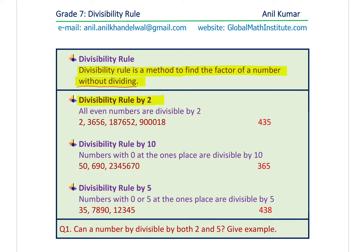Let's talk about the general rules: divisibility by 2. All even numbers are divisible by 2. What you look at is the last digit — you check the ones place. The ones place should be a multiple of 2. The number 485 is not even, so it is not divisible by 2. This position is called the ones place or unit place.